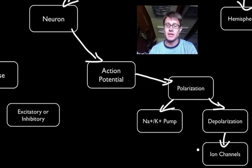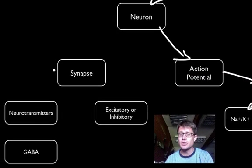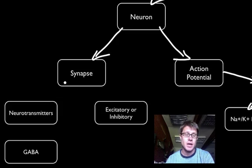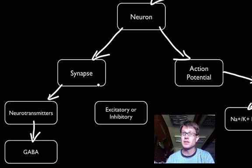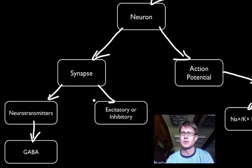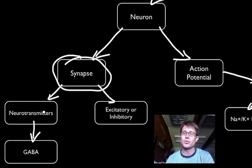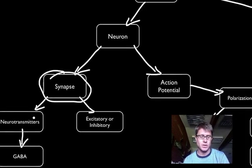When a message gets to the end of a neuron it jumps to another neuron, but those neurons aren't usually connected — there's a gap between the two called a synapse. A synapse is not an electrical message going through it; it's actually neurotransmitters, which are chemicals. An example is GABA. Those neurotransmitters send a message to the next neuron, and those messages can either be excitatory — keep the message going — or inhibitory — stop the message right here. The synapse gives us a lot of control over what happens.